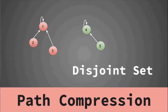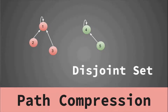Hello guys, this is CodeNCode and today we are looking at the 6th lecture of this disjoint set series. In this lecture we are going to talk about path compression, which is a technique used to enhance the running time of the disjoint set algorithm — specifically the find operation.